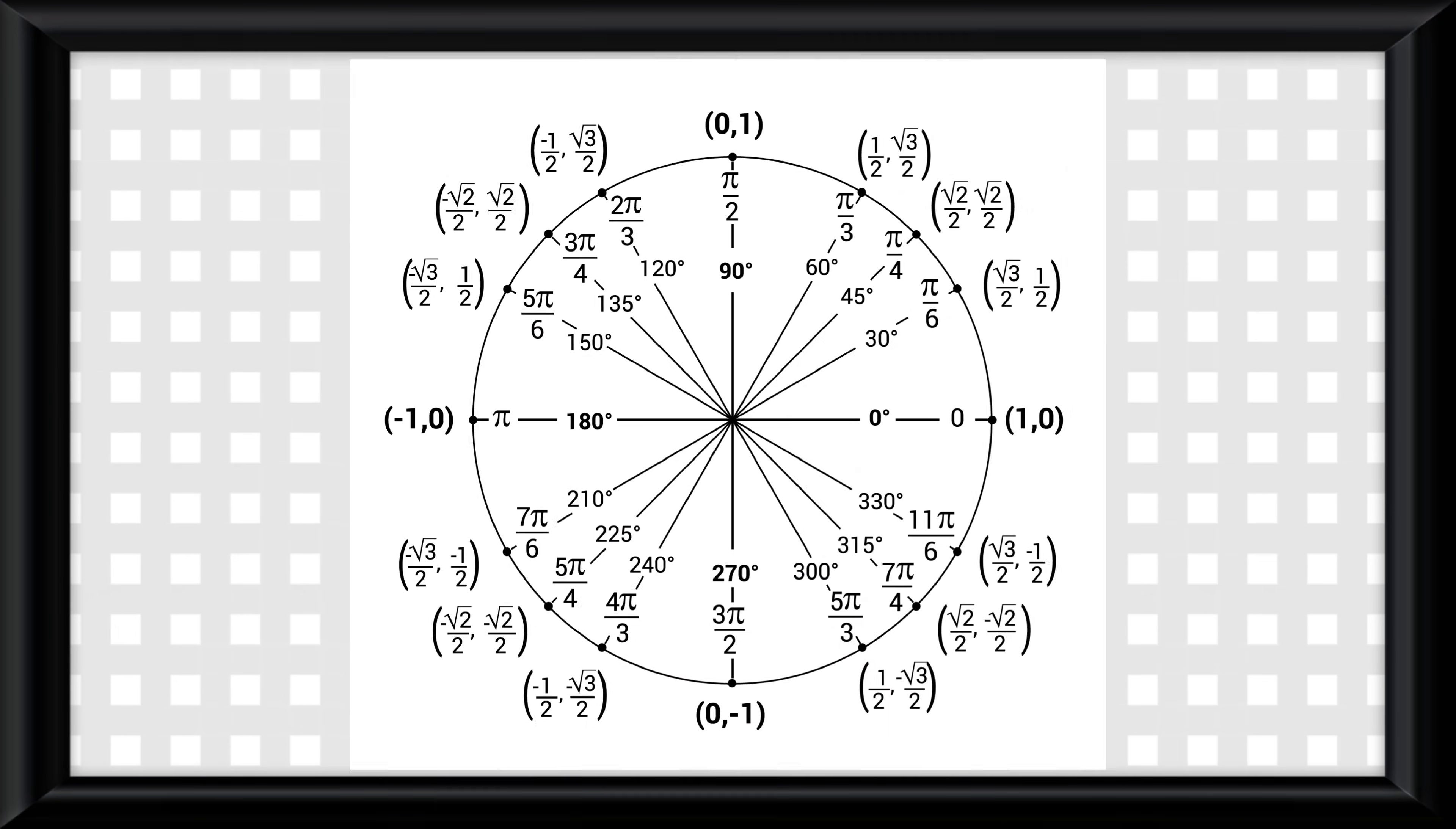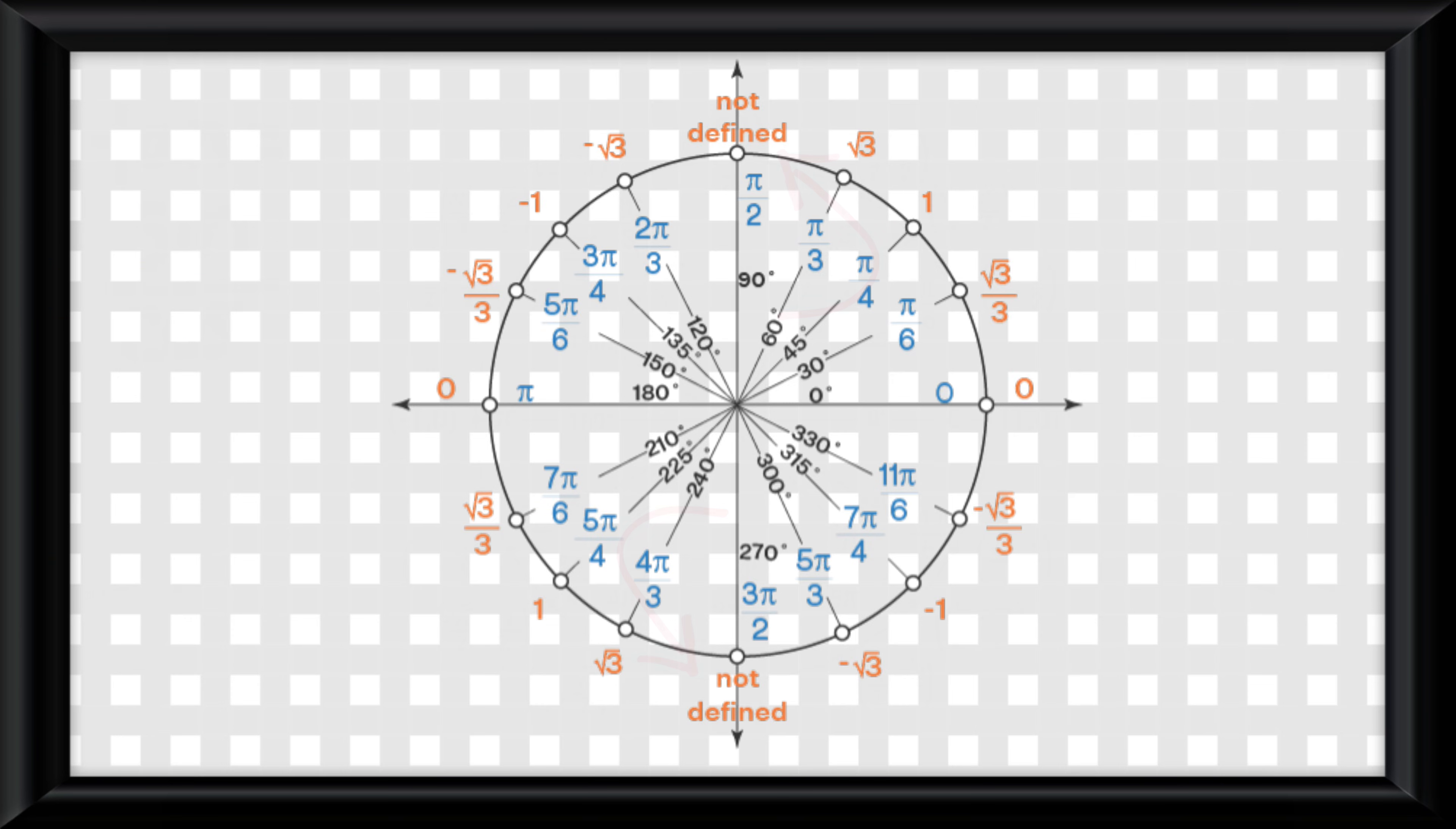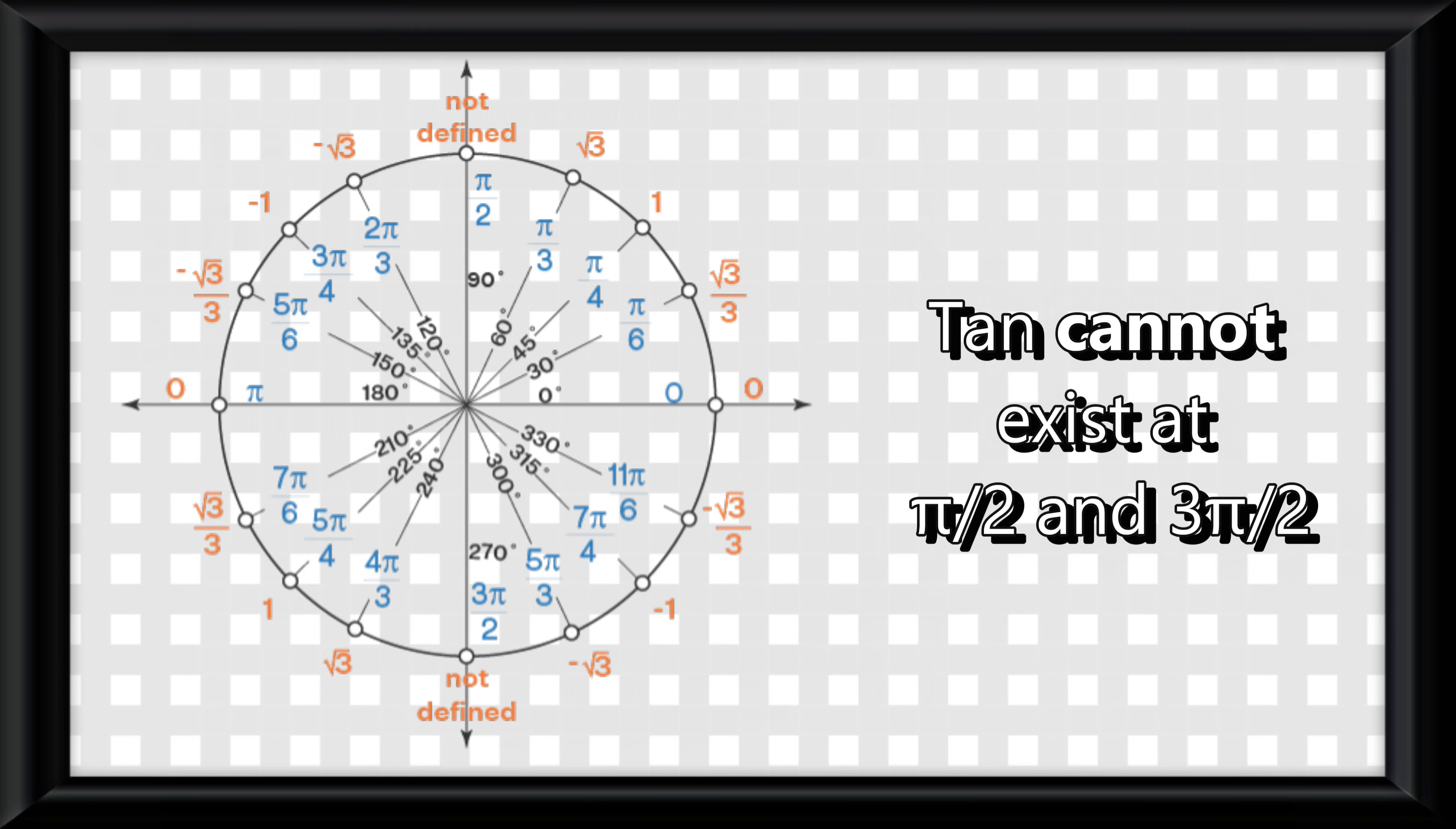Let's look at the unit circle but only with tangent solutions. We get these solutions off of the original unit circle by knowing tangent is equal to sine over cosine. You notice tangent is not defined at pi over 2 and 3 pi over 2. That simply means tangent cannot exist at those two points,